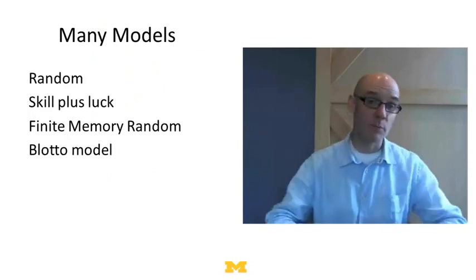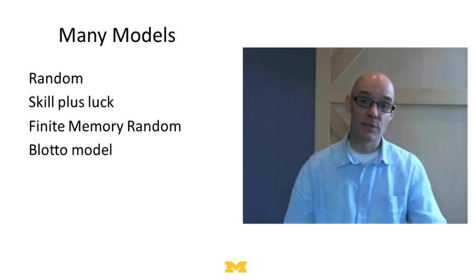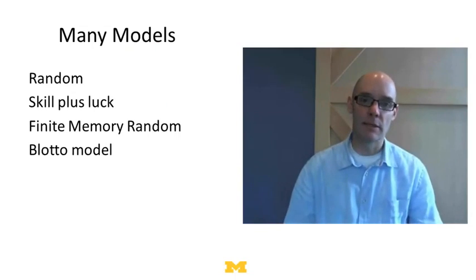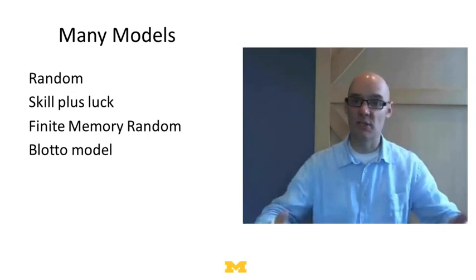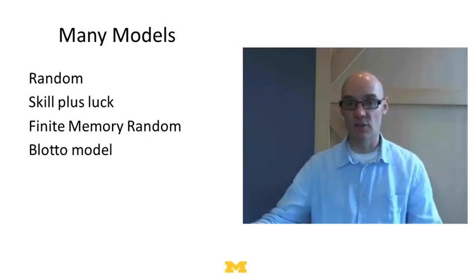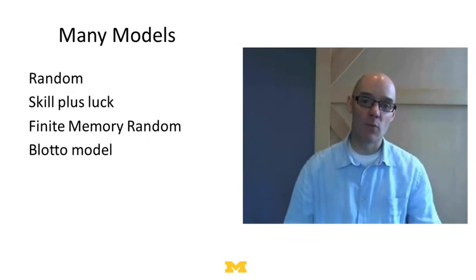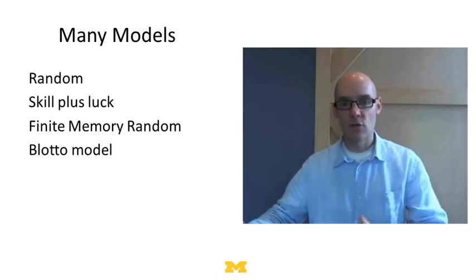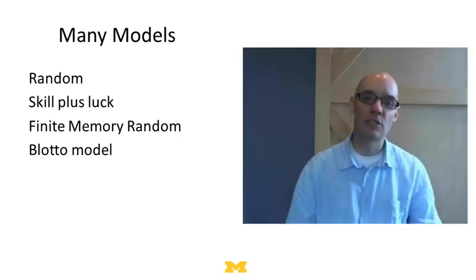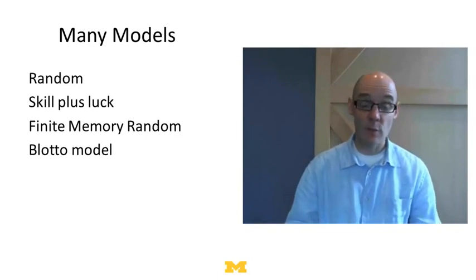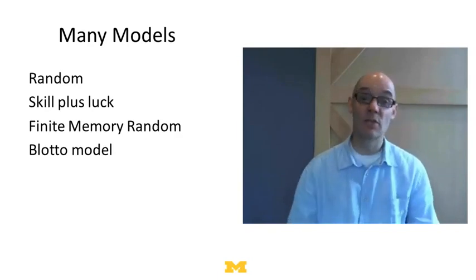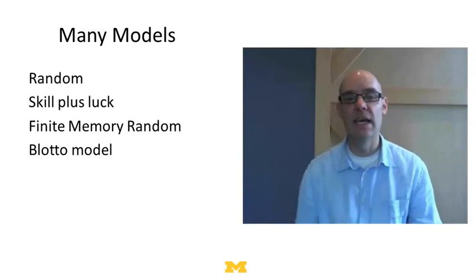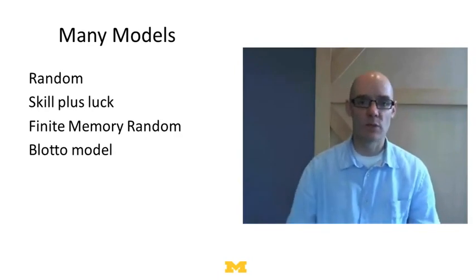We have a bunch of models — let's talk about four. We've got a pure random model, where performance is random. We've got a skill plus luck model. We've got a finite memory random walk model. And then we've got the Blotto model. In the random model, it's random who wins. In skill plus luck, there's a skill component and a luck component. In the finite memory random walk, it's sort of random but with a moving window. And in Blotto, you've got troops allocated across fronts.